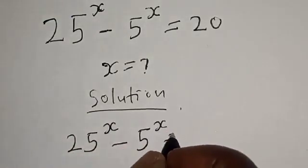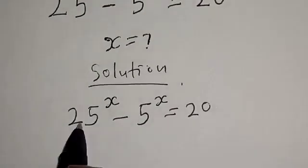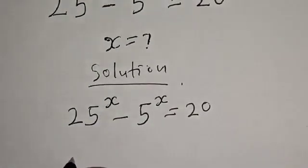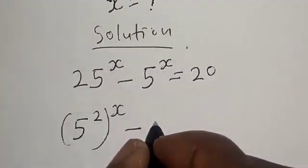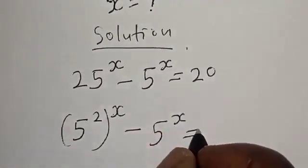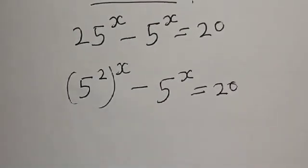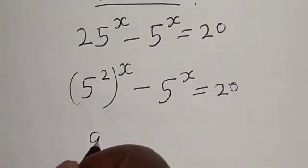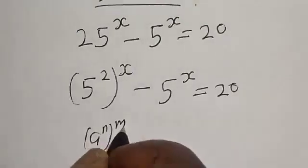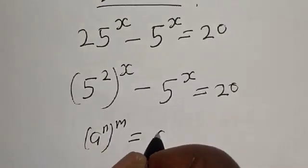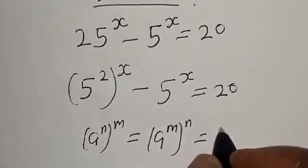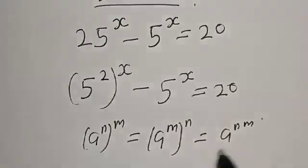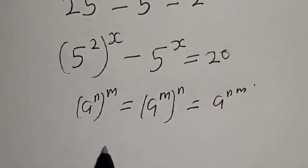25 raised to power x is the same thing as 5 squared raised to power x, minus 5 raised to power x is equal to 20. Using the identity: a raised to power n raised to power m equals a raised to power n times m, we make use of this identity.